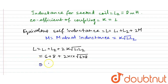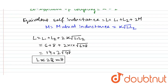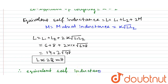So we calculate: 14 plus 2 into root of 48. The result is 28 millihenry. L is equal to 28 millihenry. We have mutual inductance — the equivalent self-inductance L is equal to 28 millihenry.